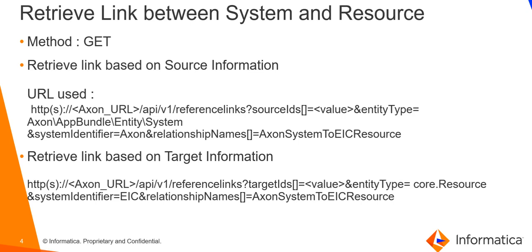Once the integration between Axon and EDC is done, users link the Axon systems to the EDC resources. Whenever a link is established between Axon and an external application, the source object is the object from Axon and the target object is the object from the external application. Therefore, in the case of an Axon system to EDC resource link, the source object is the Axon system and the target object is the EDC resource. There are two scenarios: one where the user has source object information and the other where the user has target object information. The link information can be retrieved if we have either the source or the target information, and we will discuss both scenarios.